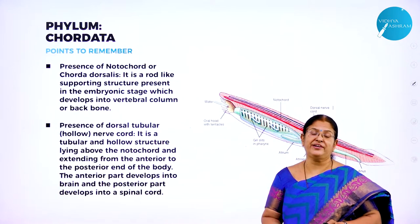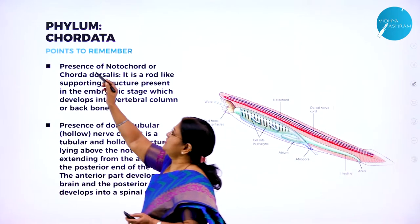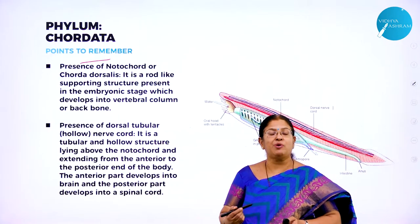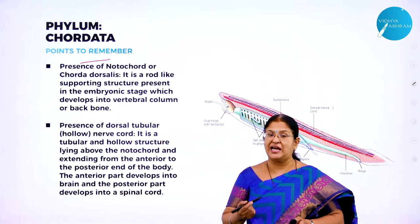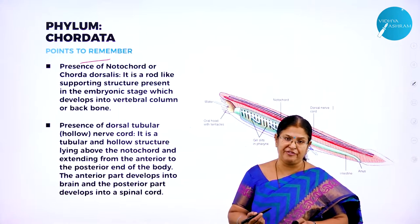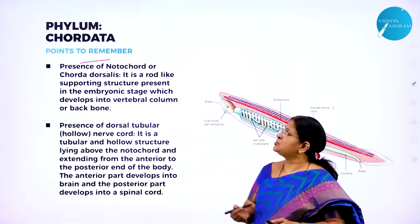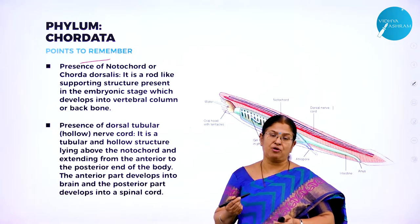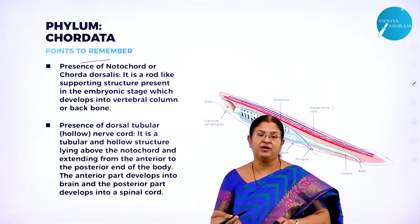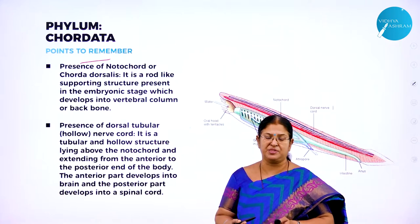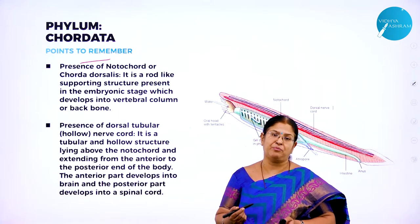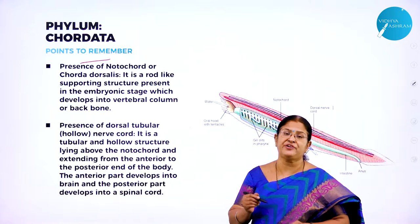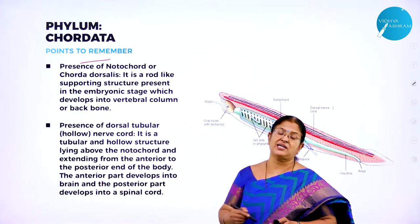We are going to move on to a very interesting phylum called phylum chordata. The whole of the animal kingdom is divided into invertebrates and vertebrates. We have come across the 9 invertebrate phyla starting with phylum porifera and ending with phylum echinodermata. They are called invertebrates because they do not have a vertebral column and certain chordate features, hence called lower organisms.